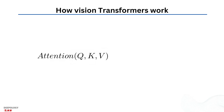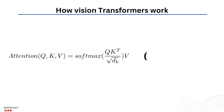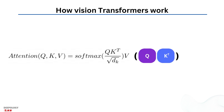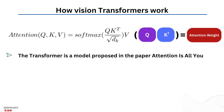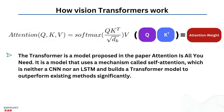Before diving deep into how vision transformers work, we must understand the fundamentals of attention and multi-head attention presented in the original transformer paper. The transformer uses a mechanism called self-attention, which is neither a CNN nor an LSTM, and outperforms existing methods significantly. The attention mechanism uses three variables — query (Q), key (K), and value (V). It calculates the attention weight between a query token and a key token, then multiplies the value associated with each key.